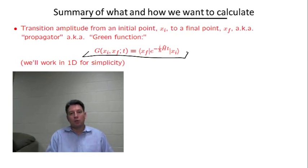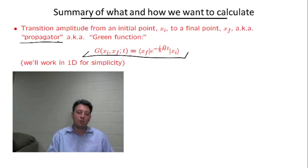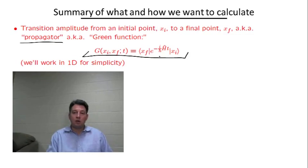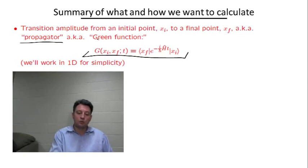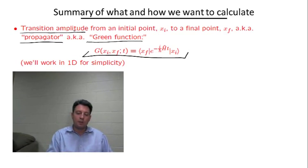The second comment I would like to make is that what we call the propagator also appears in the literature under the name of transition amplitude — from an initial point x_i to the final point x_f in this case. A very closely related object is also called the Green's function. So if you see these expressions in the literature, they may be very much related to one another and all refer to this object essentially.